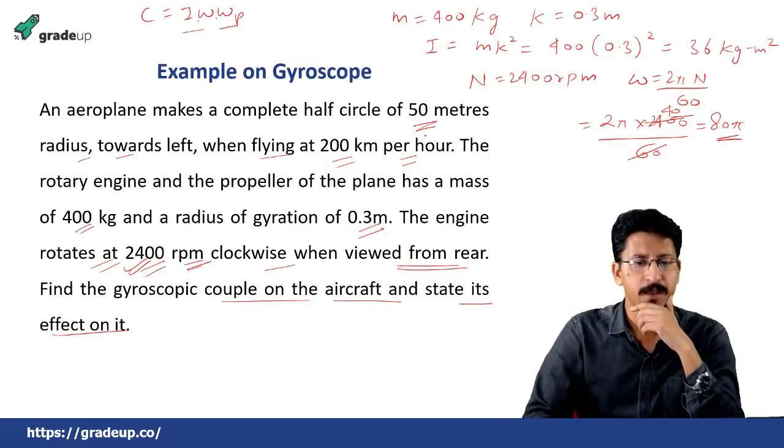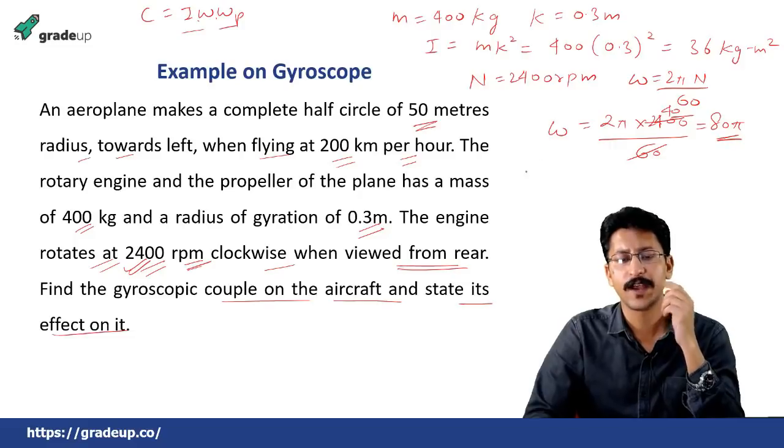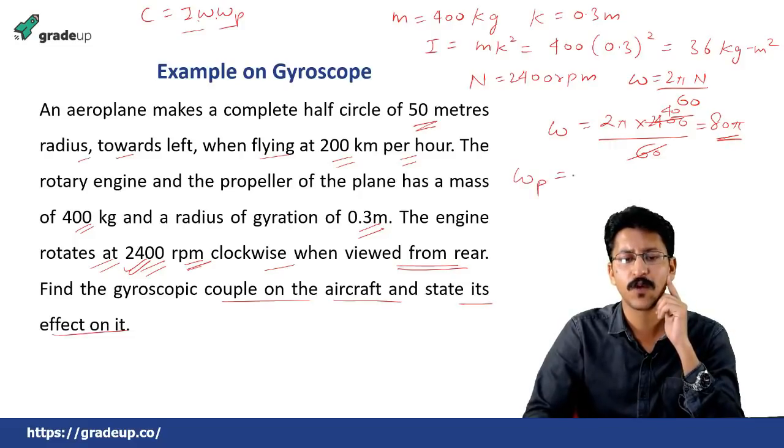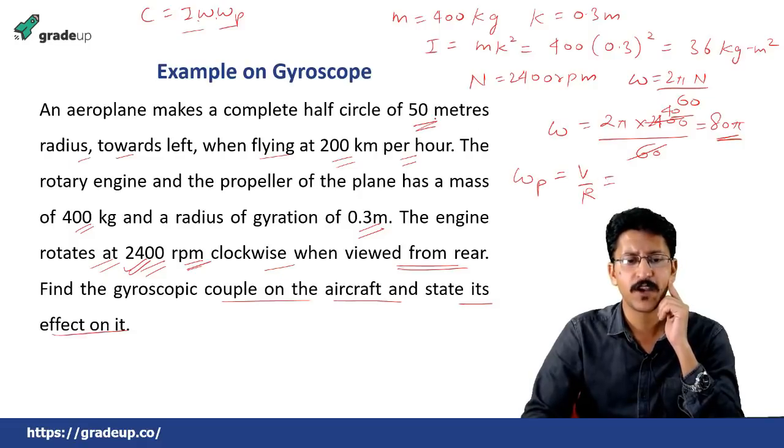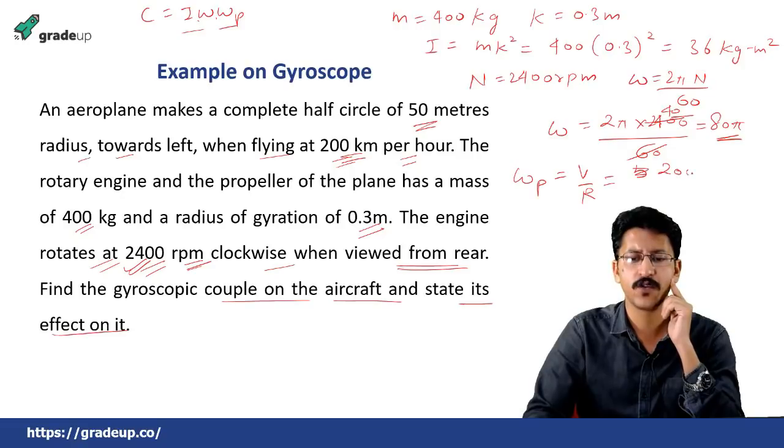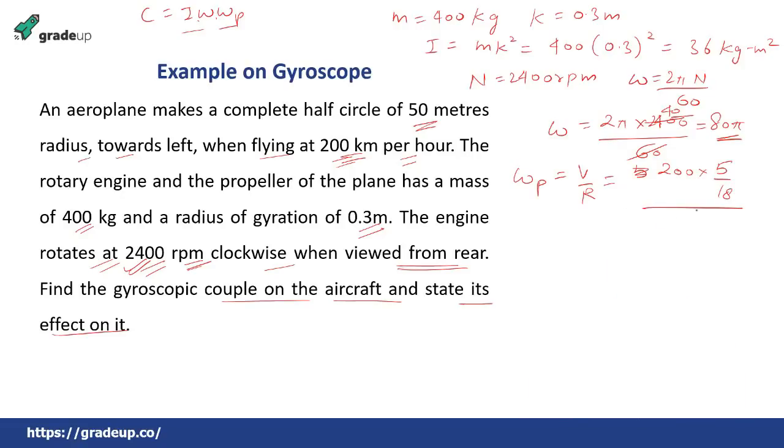Then you are not given omega p directly. Then how to find the omega p? Omega p is equal to v by r. Because v is equal to r omega. So the velocity has been given to you as 200 kilometers per hour. So just convert that 200 into meter per second that is 5 by 18 divided by r is 50. So this goes here 4 times. This goes here 2 times 9. So this becomes 10 by 9. This is the omega p radians per second again.